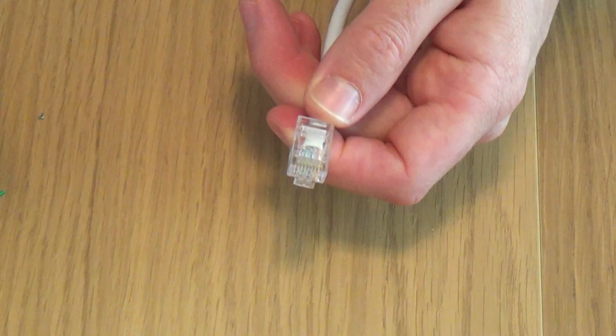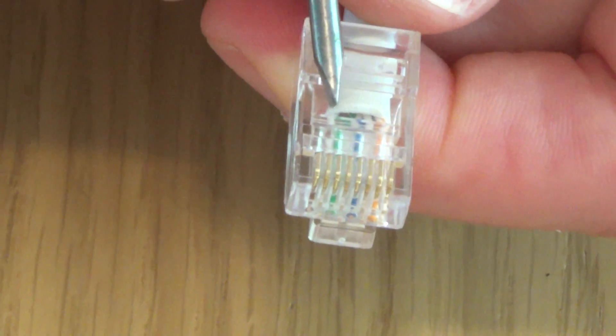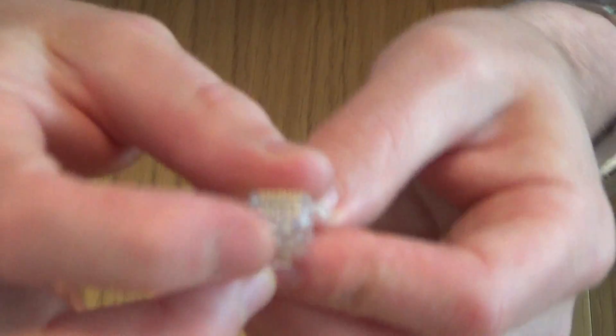Now let's have a look. So we've got to make sure we've got the right colours. White orange, orange, white green, blue, white blue, green, white brown, brown. Okay. And then you simply make sure that they're pushed right away to the end there. You can probably see the coppers at the very end.